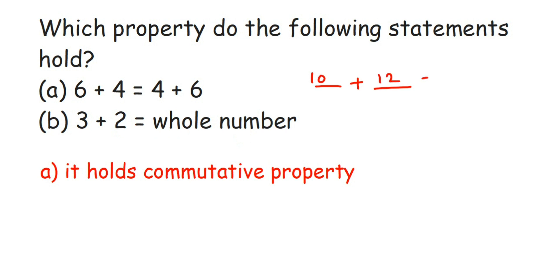be equal to 22, right? 22 is again a whole number. If you're adding two whole numbers, your final answer is also a whole number. That's called closure property. So for the second one it will be closure property.